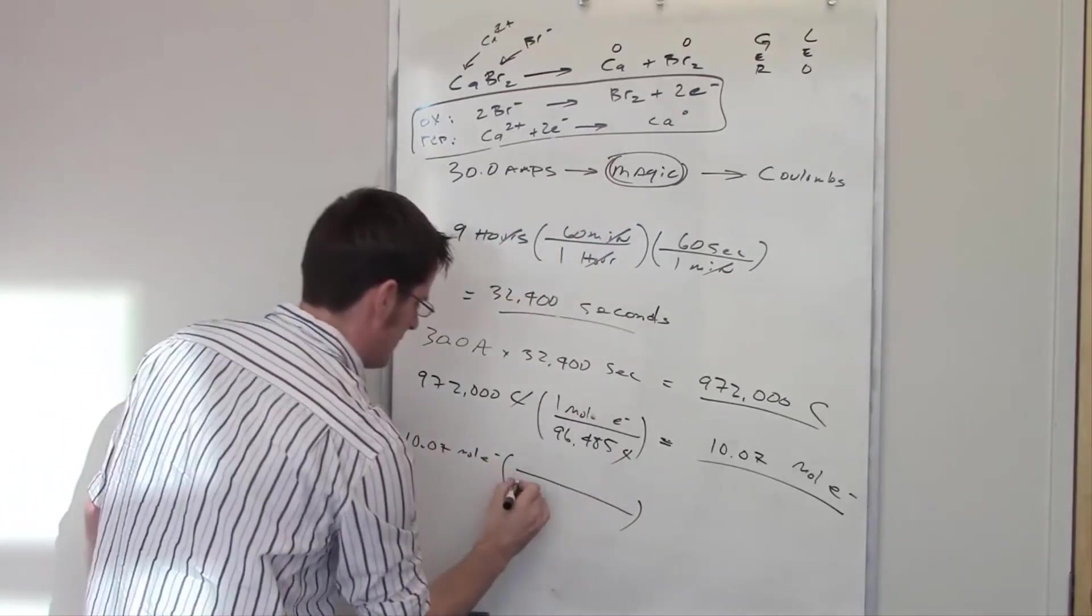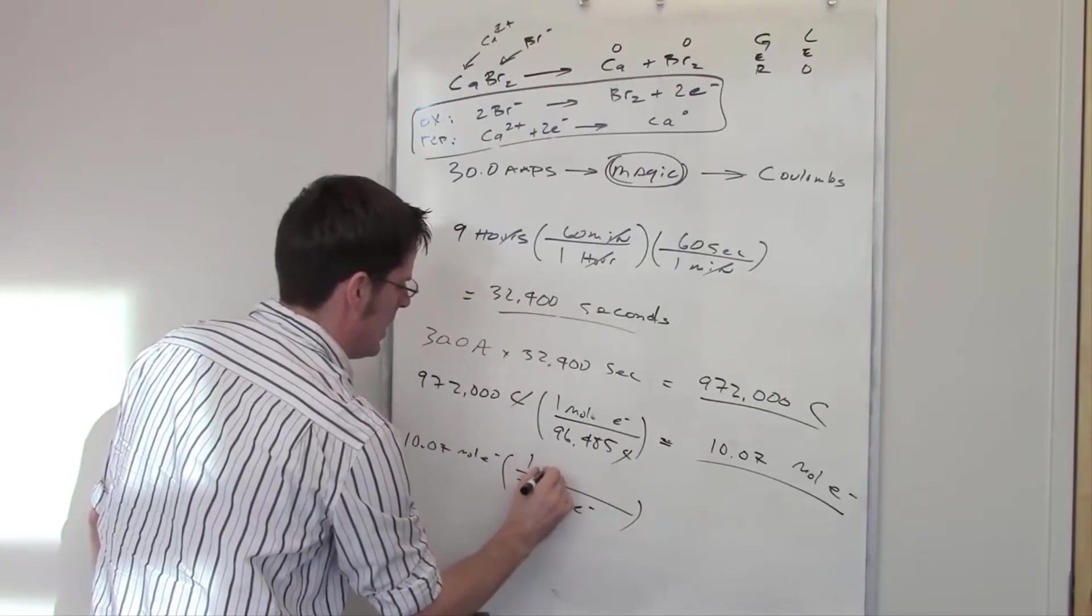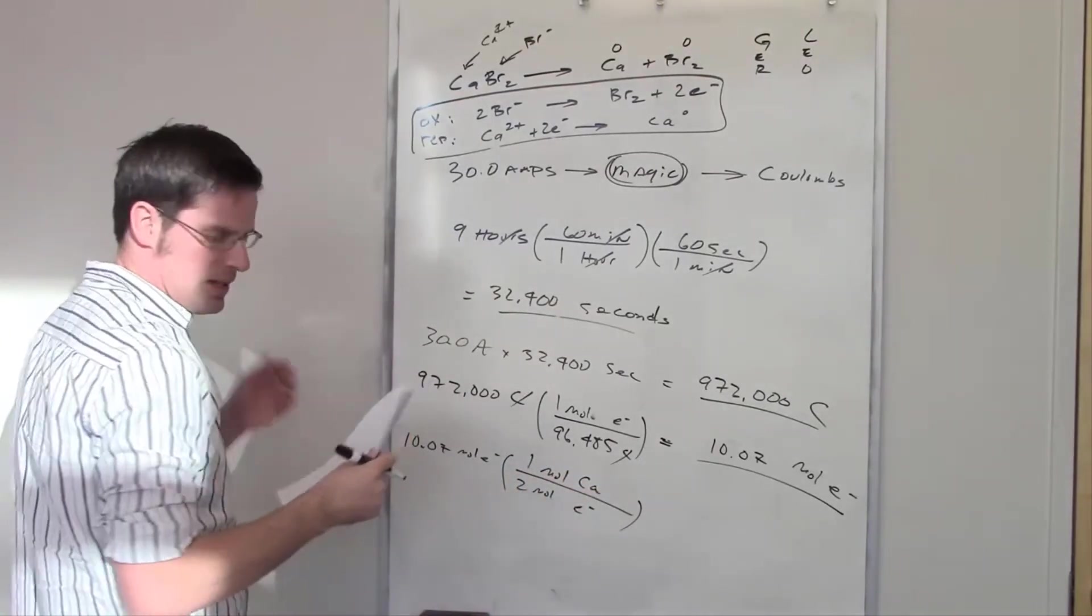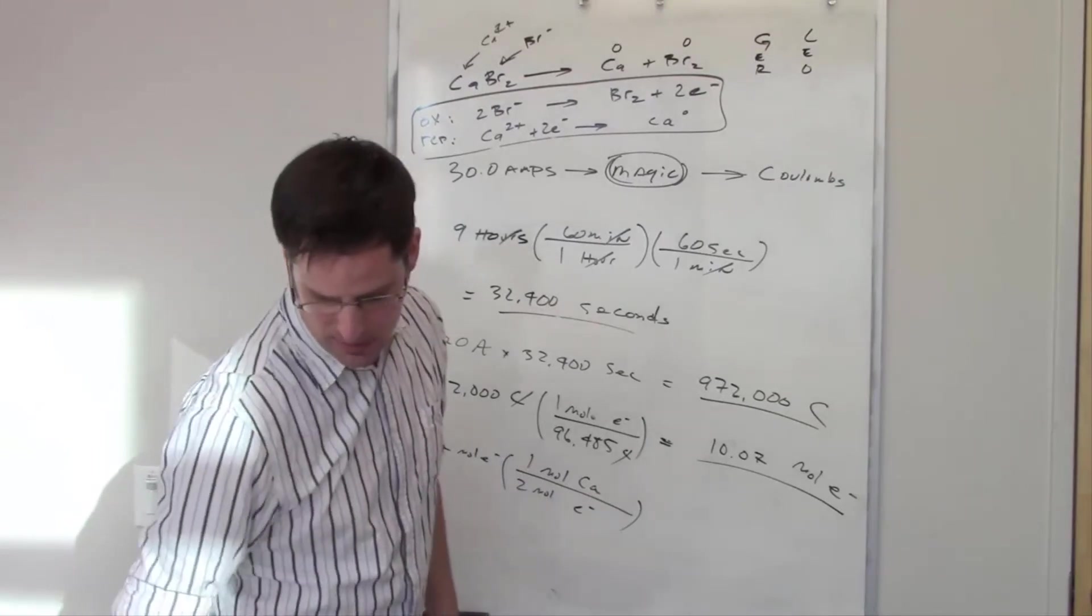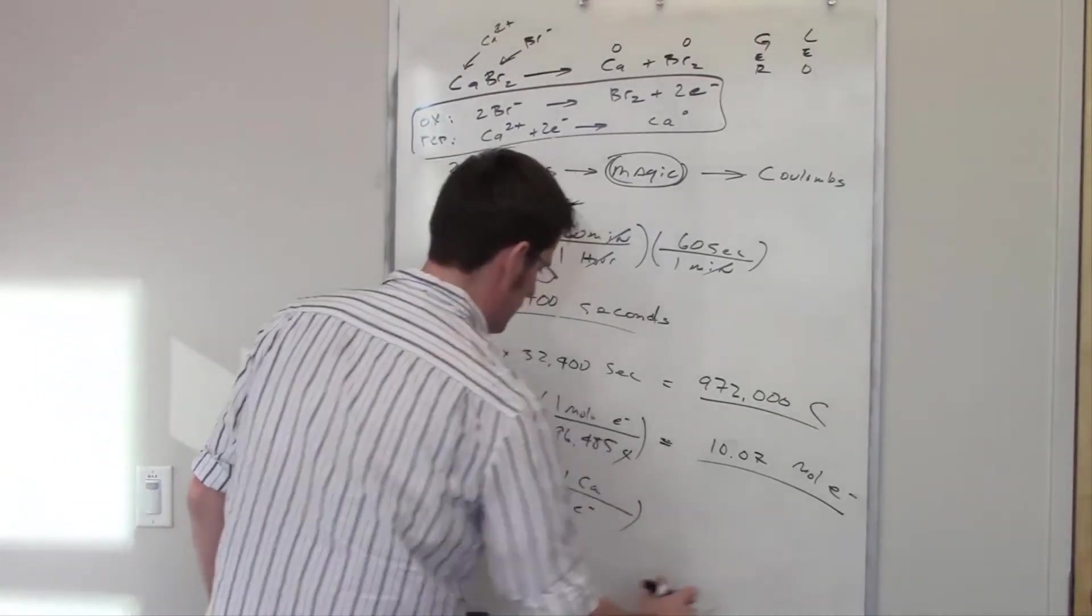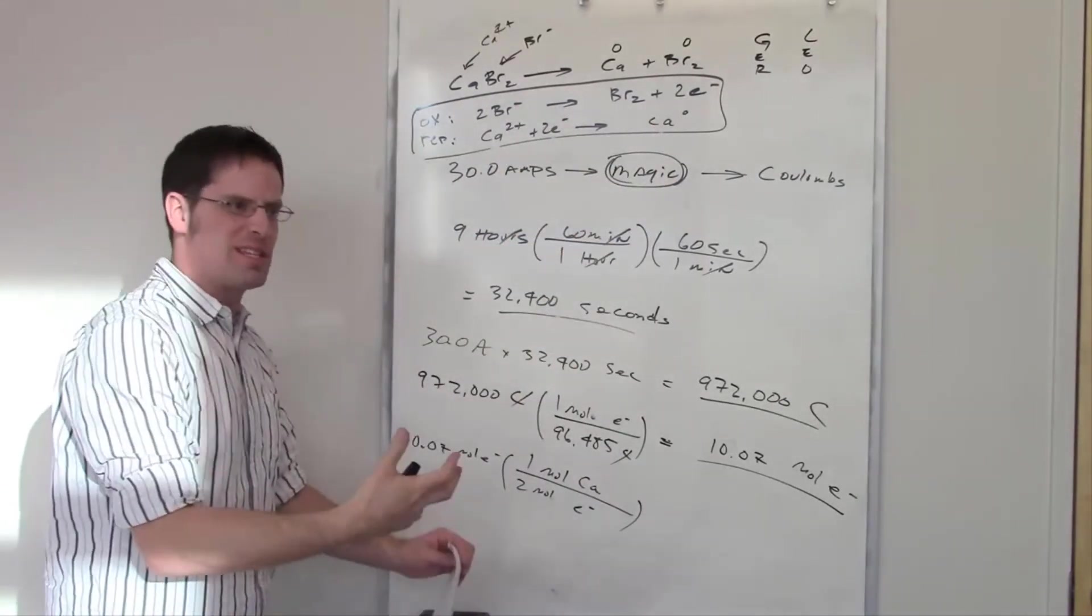So you've determined from before this is 10.07 moles of electrons, which is how many moles of electrons have been put into this thing when we ran 30 amps for nine hours. So I'm going to write down 10.07 moles of electrons right here.